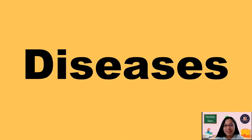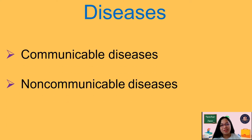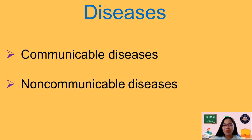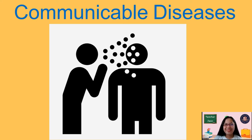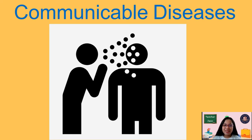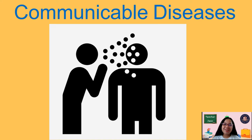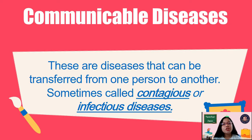Diseases can be classified in two ways: communicable and non-communicable diseases. Look at the picture about communicable diseases. What can you say about it? If you think it is a disease that can be transferred from one person to another, you are correct. Communicable diseases are diseases that can be transferred from one person to another.